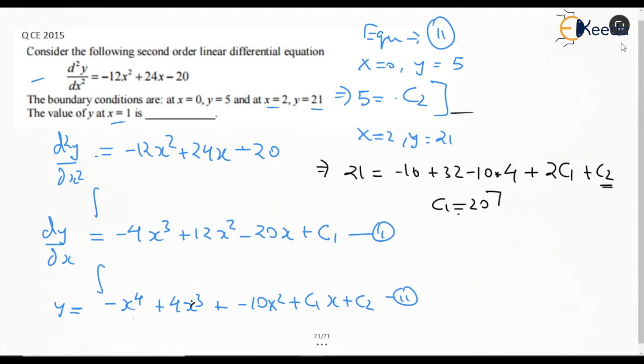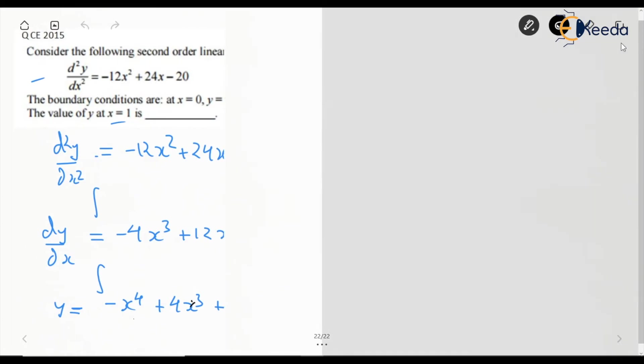The equation we have is y = -x⁴ + 4x³ - 10x² + 20x + 5. We have to find this at x=1.